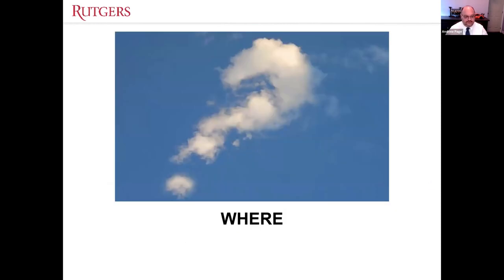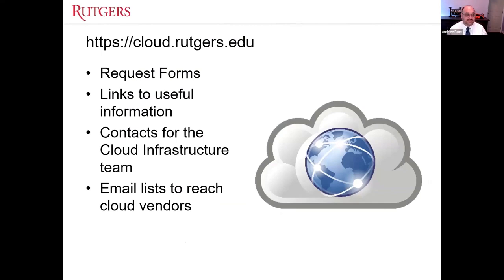Where can you find out more? We have a website: cloud.rutgers.edu. It contains request forms, links to useful resources, contacts for our team, and email lists to reach our cloud vendors. There are basically four email lists — one contacts everyone at Rutgers who can support you, and the other three include that first list plus contacts at each vendor. So there's an AWS cloud team or Azure cloud team email listed on the website. We did this because we're constantly seeing questions like 'who's our current Dell rep?' — because it changes. The cloud team keeps those mailing lists up to date. Just think about which group you're emailing: if you want to ask which is the best cloud provider, keep that to the Rutgers internal list.